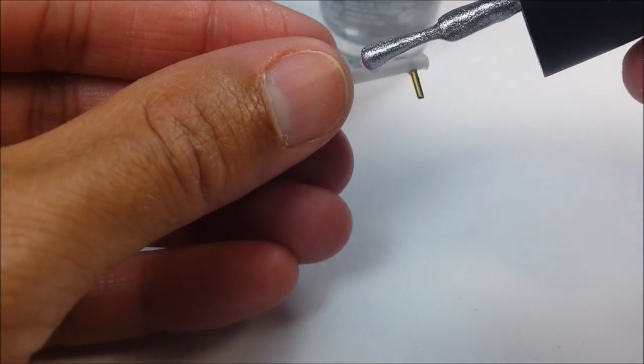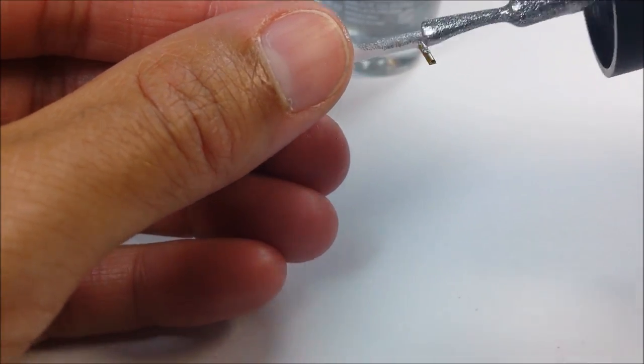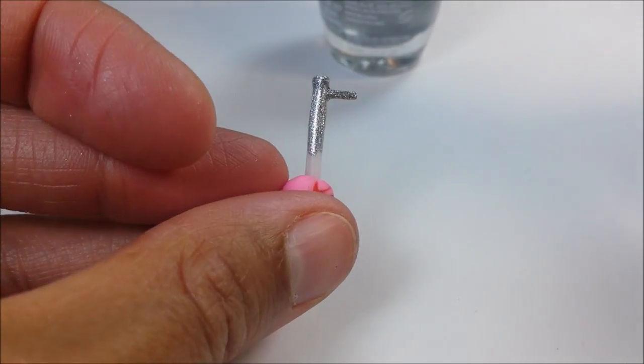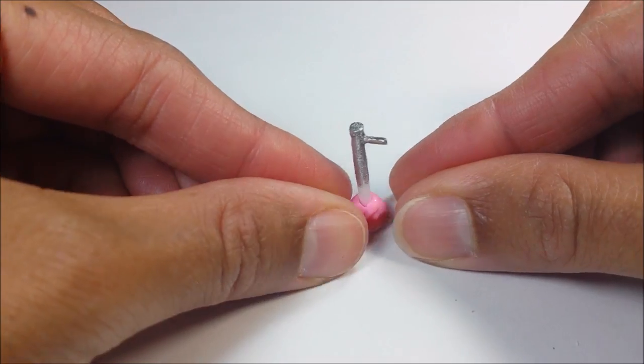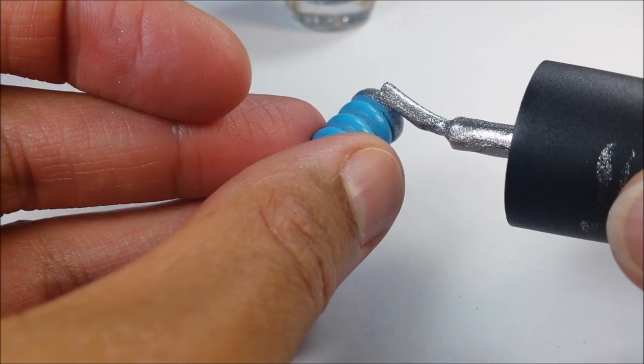I attach a bit of clay to the bottom to hold it in place and paint silver. Then I paint the bottom of each bead.